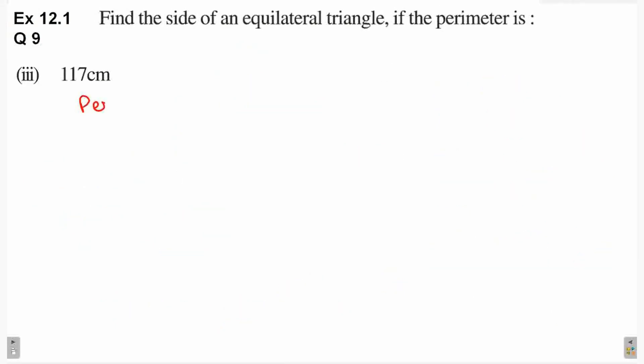Abh yaahaan per perimeter given hai, 117 cm. Perimeter is equal to 3a. Abh yaar a stands for side. 117 is equal to 3a. A kitna a gya? A is equal to 117 divided by 3.